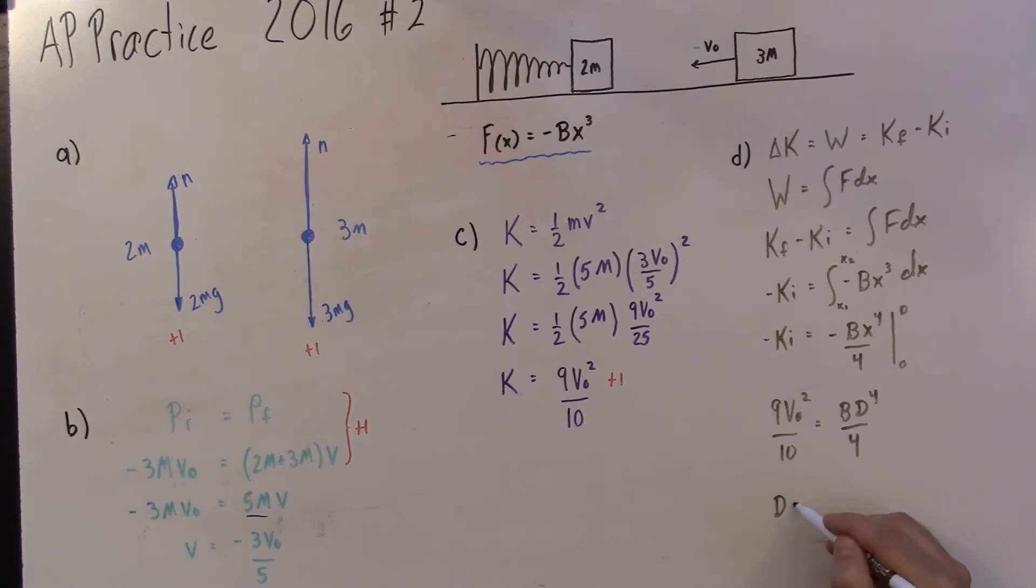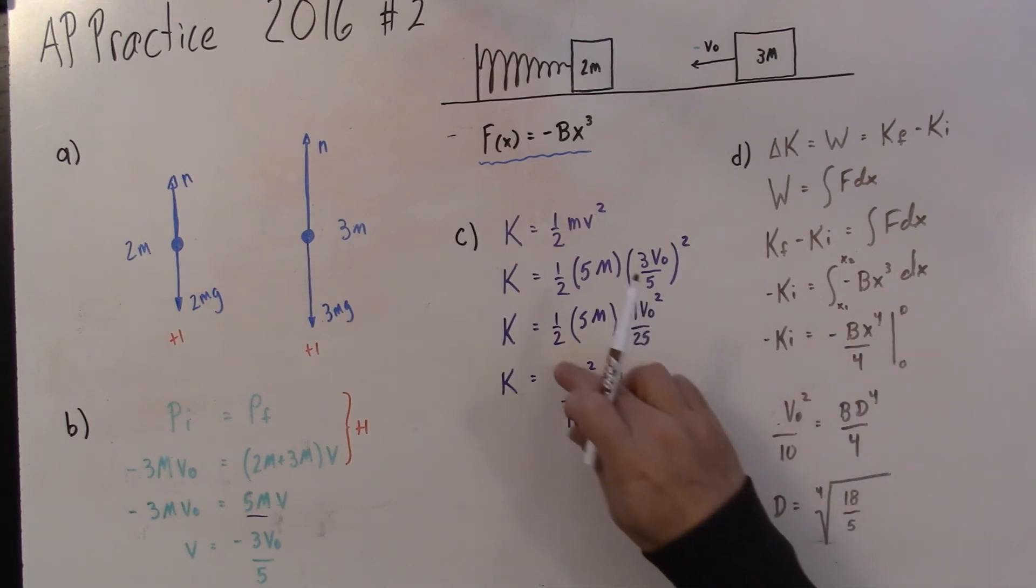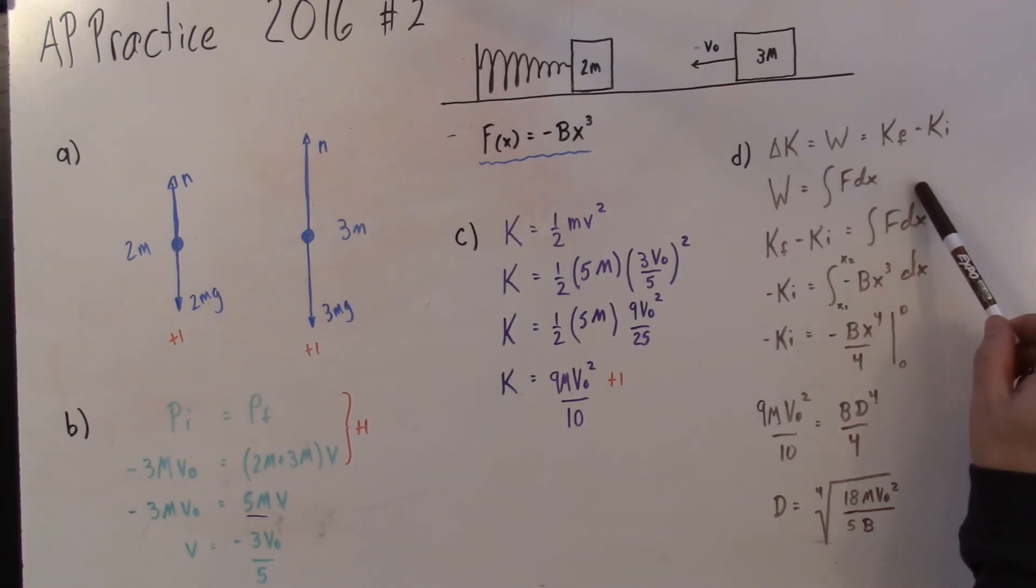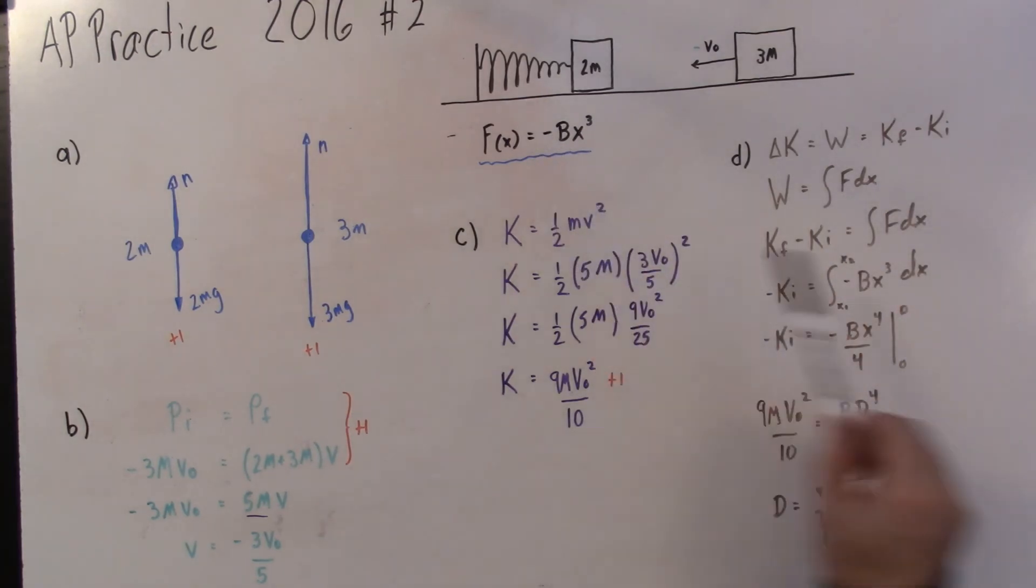And I end up with d equals the fourth root, because I've got to solve for d, of 18... Oh, I lost an M in here. I lost an M in here too. Yikes! I can't lose these M's, people. There. 18mv0 squared all over 5b. So this was actually the hardest part of this. The work is the anti-derivative of the force function. You're going to have to do this. This was four points. Not trivial.